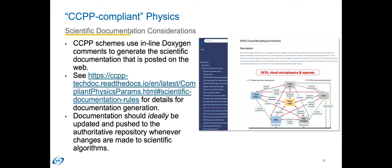Documenting a CCPP-compliant scheme makes use of specially formatted in-source comments parsed by the Doxygen software, producing human-readable content while being subject to version control along with the rest of the code. Scheme documentation is not required for the scheme to work with the CCPP software framework, but it's highly encouraged for developers to adequately document their algorithms for future maintenance and potential improvement. There are detailed instructions for adhering to the desired format on the CCPP website, and many examples exist within the existing CCPP repository for you to replicate.